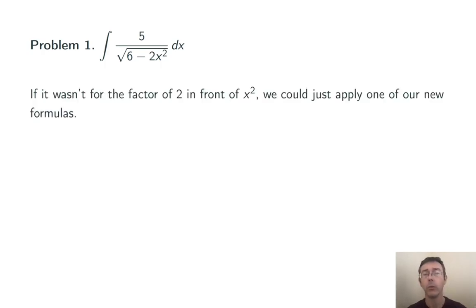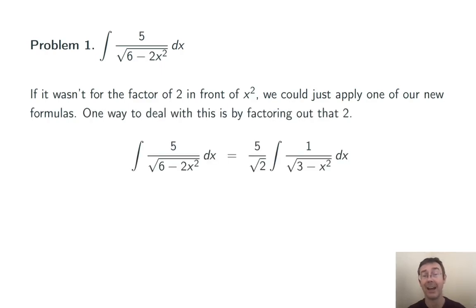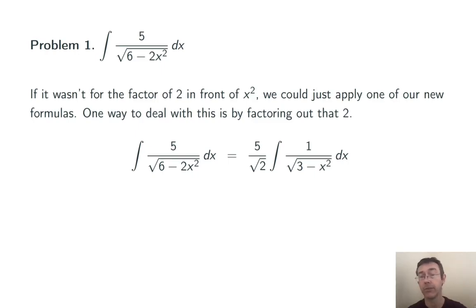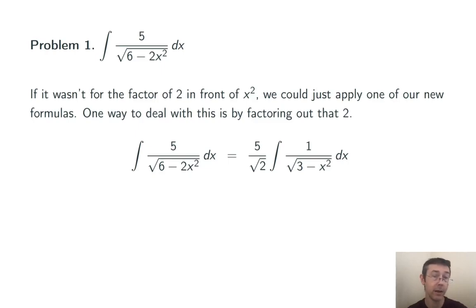First of all, I don't want that 2 in front of the x squared, so I'm going to factor that out — I'll pull the 2 out of the entire radical. When it comes out of the radical, it becomes the square root of 2. While I'm at it, I'm going to factor that 5 out of the numerator. So I've got 5 over the square root of 2 times the integral of 1 over the square root of 3 minus x squared dx.